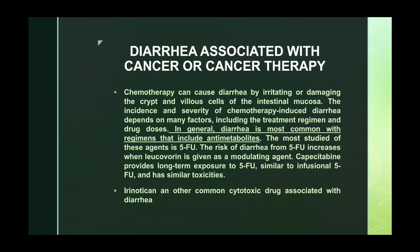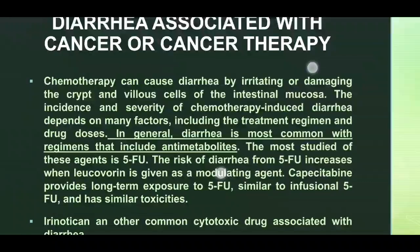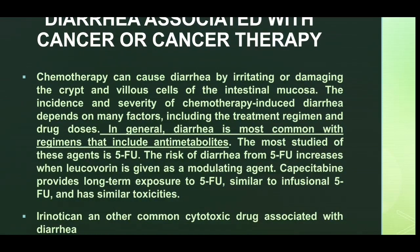Diarrhea associated with cancer or cancer therapy: chemotherapy can cause diarrhea by irritating or damaging the crypts and villi of the intestinal mucosa. The severity depends on the treatment regimen and drug dose. Diarrhea is most common with regimens including anti-metabolites — such as 5-fluorouracil, methotrexate, and pemetrexed — which act on specific enzymes for cell replication. Drugs like folinic acid and vitamin B12 are used to prevent side effects of these agents. 5-Fluorouracil is the most studied diarrhea-causing agent.